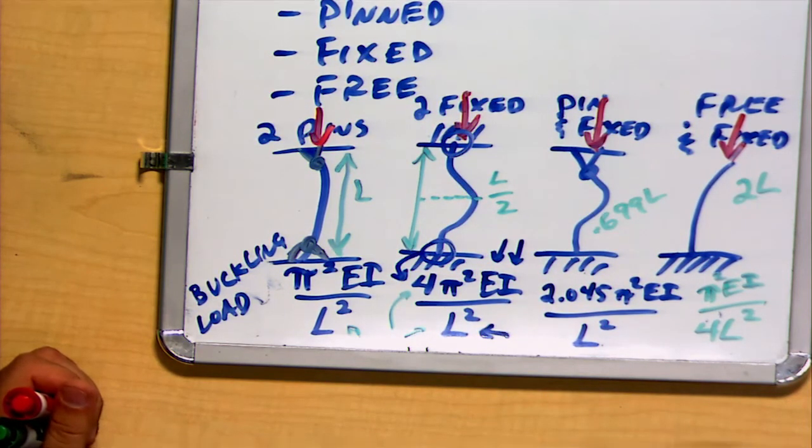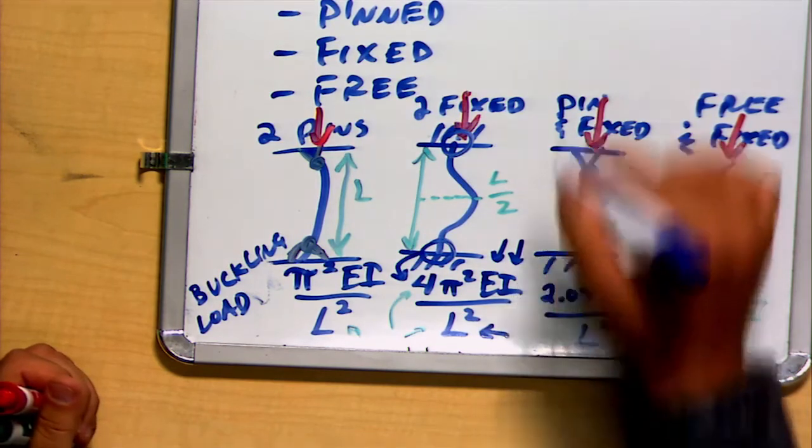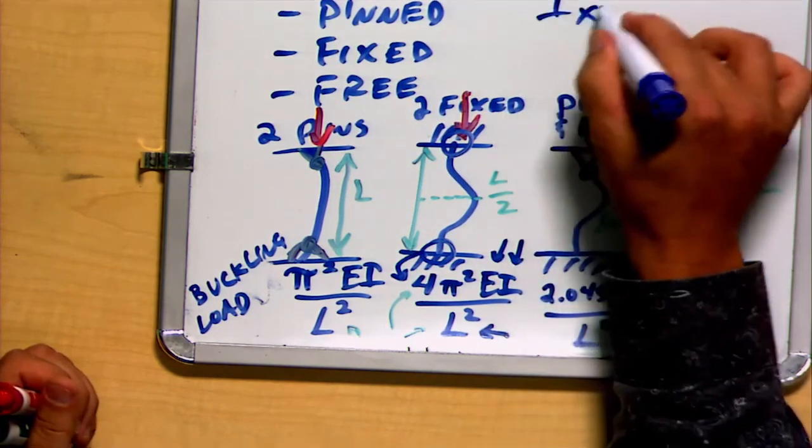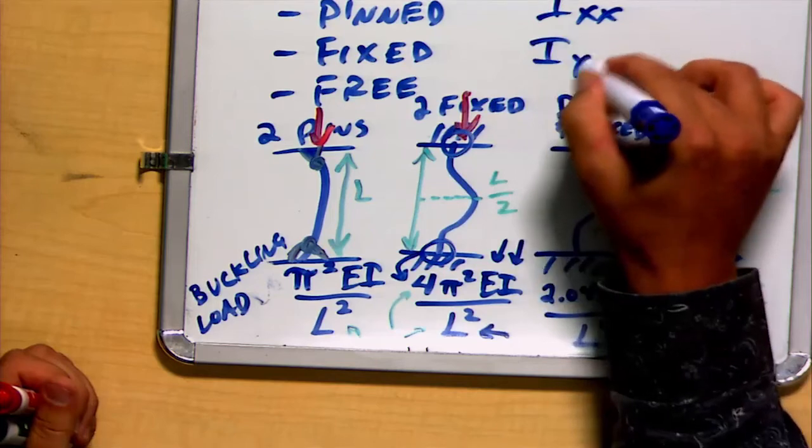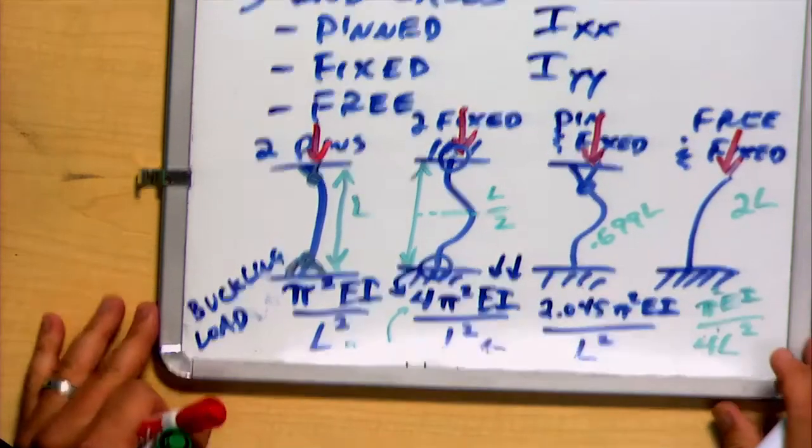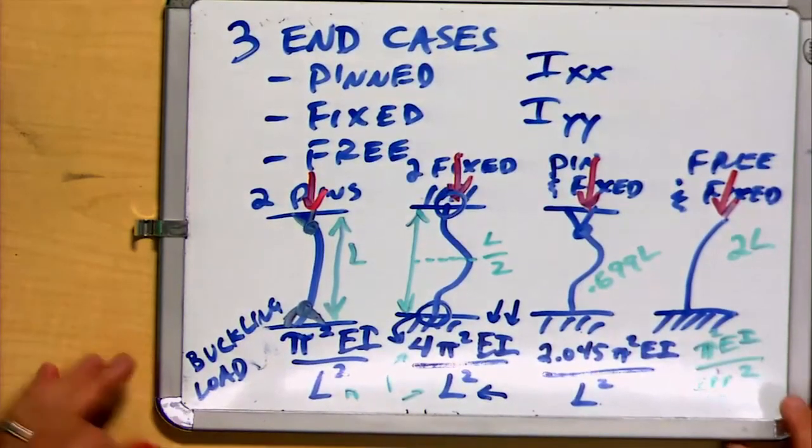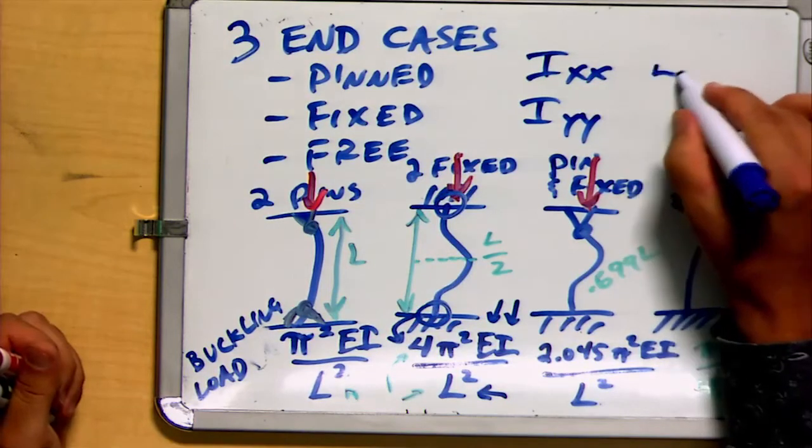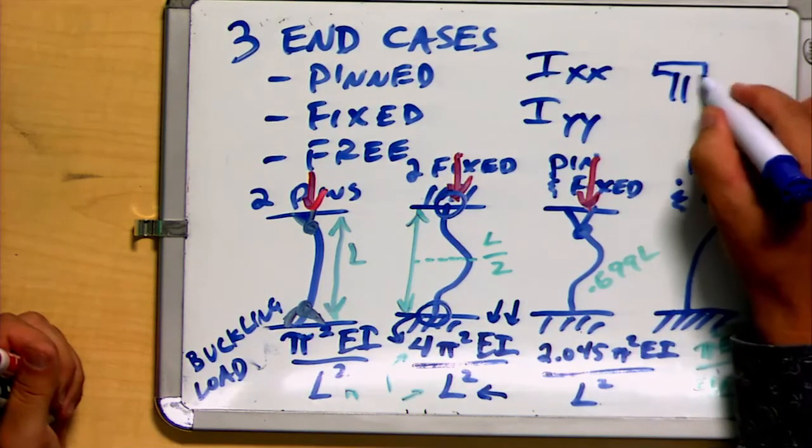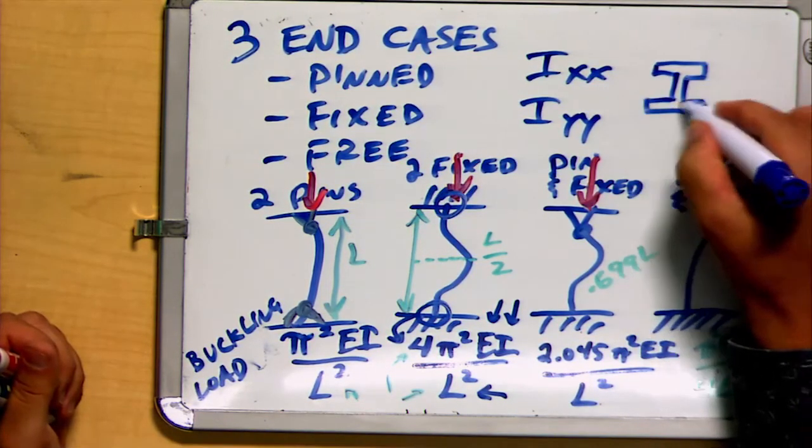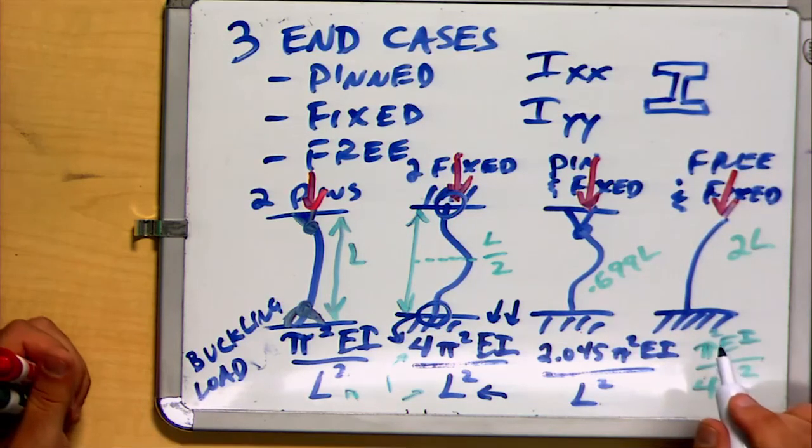Notice you might have a different moment of inertia, Ixx, or Iyy, if your beam is not symmetric, if it's not round or square. For example, if it's something like an I-beam, you might have a different moment of inertia. Well, what you usually want to use is the smaller of those two values to determine what the smaller critical load is because buckling is liable to occur in that direction.